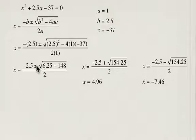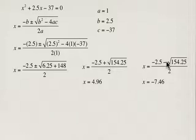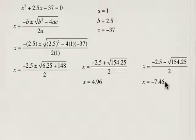Going back to where these two numbers come from: in our formula, remember we have plus or minus. The 4.96 comes from adding the square root of b squared minus 4ac, and the negative 7.46 comes from subtracting it. Since x represents the width, we can automatically eliminate negative 7.46 because we cannot have a negative width. So our solution is x equals 4.96.